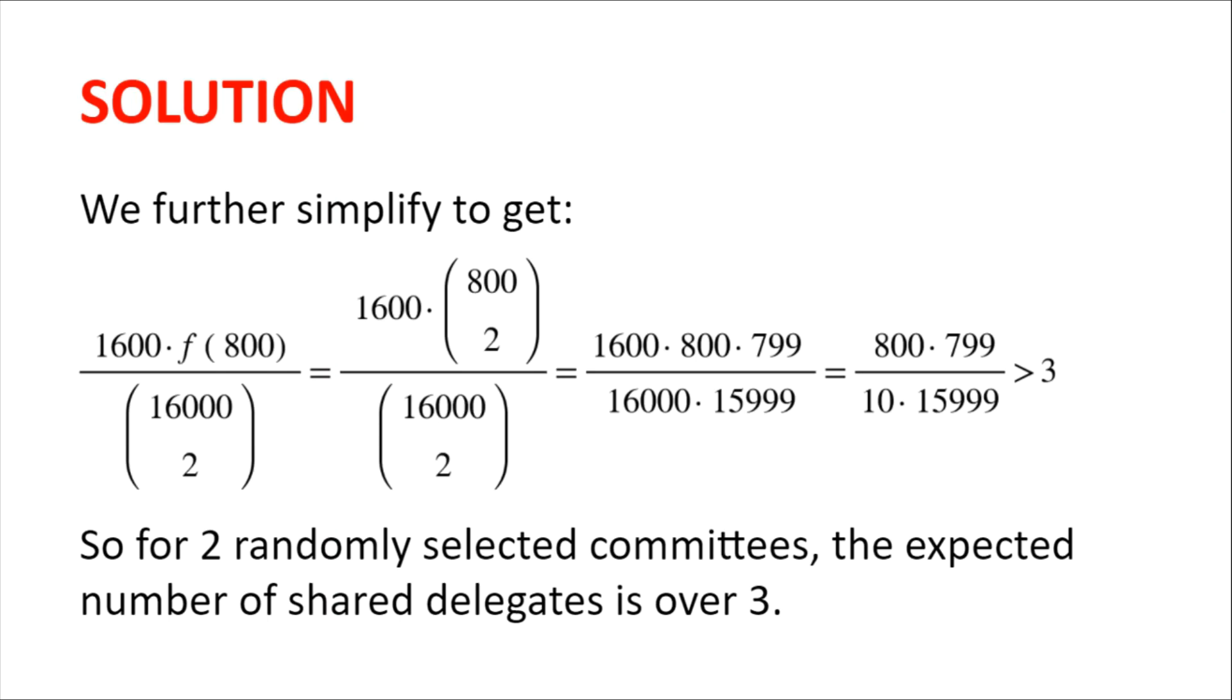The two factorials cancel, which is 800 multiplied by 799 divided by 10 multiplied by 15,999. Now we can easily check that this is greater than three. It is in fact almost four.